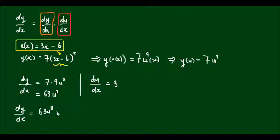So dy/du multiplied by du/dx. That will leave me with 3 times 63 = 189u^8. And u, we know, is equal to 3x - 6. So the differential of y with respect to x is equal to 189(3x - 6)^8.